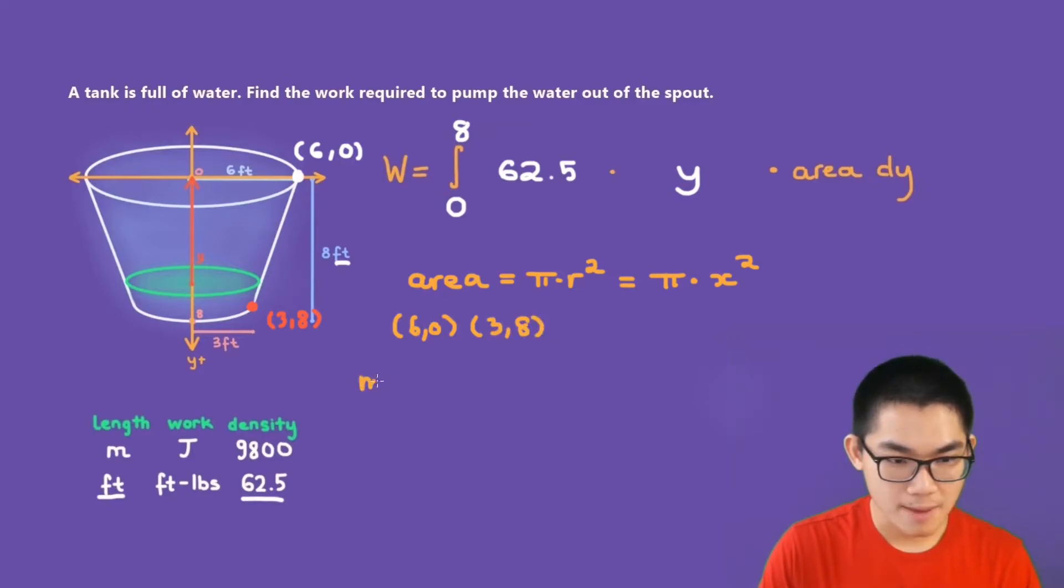The slope, m, will be the same as 8 minus 0, divided by 3 minus 6. This is the same as 8 divided by negative 3. So putting this into our point slope formula, we get y, which is the variable that we're looking for, is equal to negative 8 over 3 times x plus b.